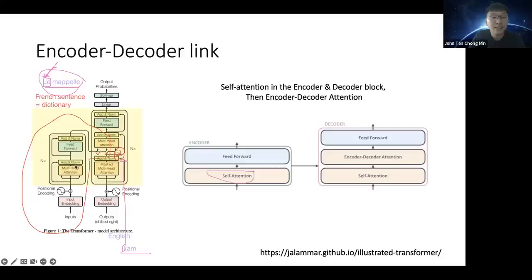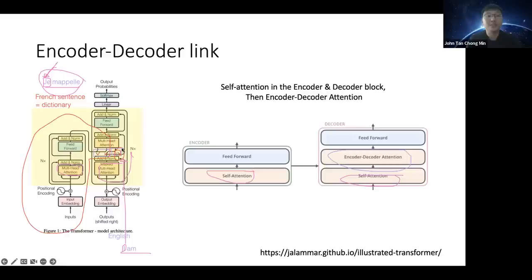There is attention everywhere in the original Transformer: self-attention in the encoder, self-attention in the decoder, and cross-attention between encoder and decoder — where the encoder takes the value and key and the decoder takes the query. This is why the paper is called 'Attention Is All You Need.' The key idea is iteratively updating word embeddings to become more precise and suited to the meaning of the sentence.